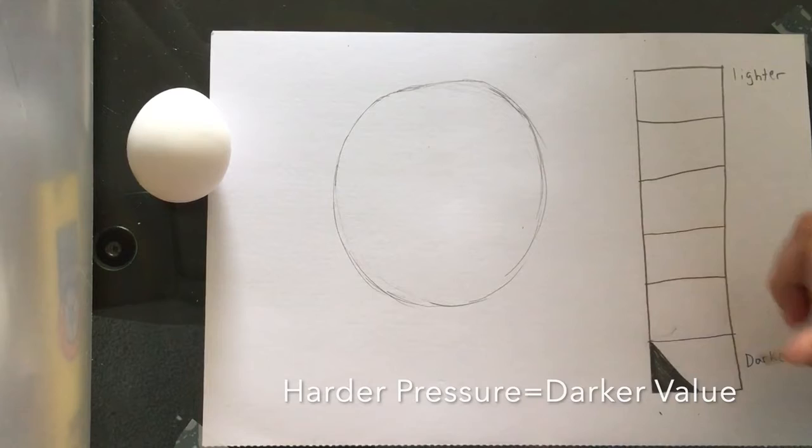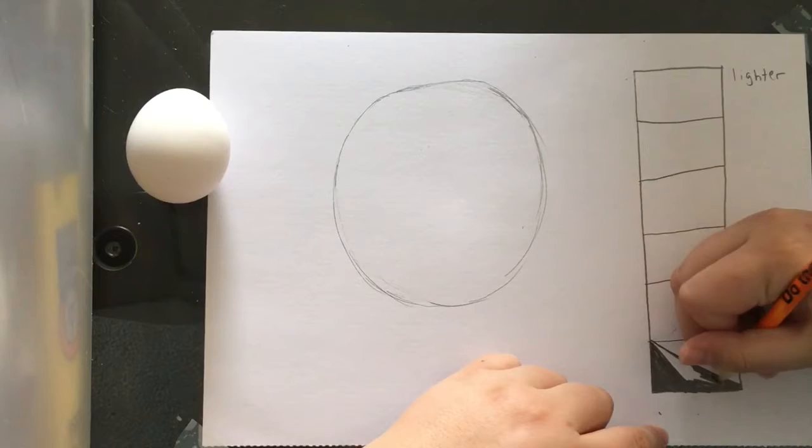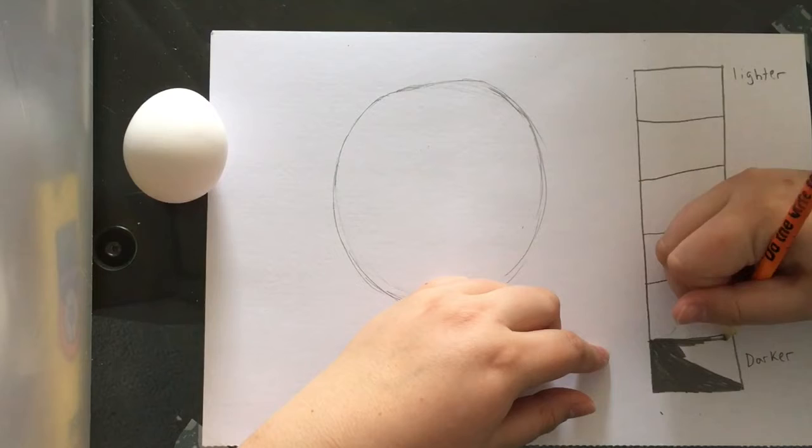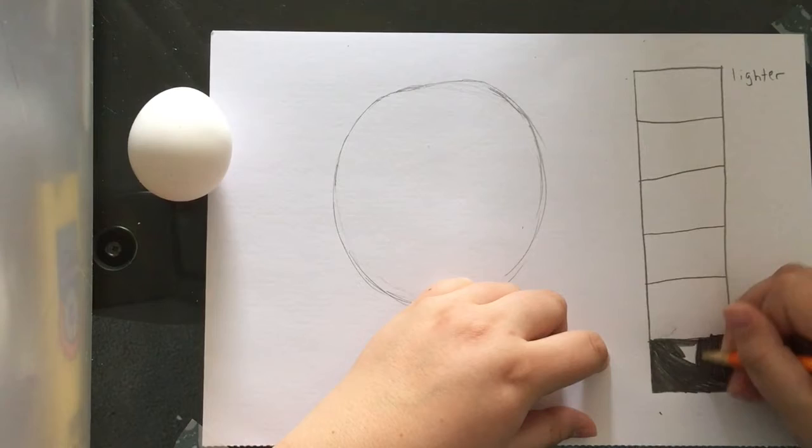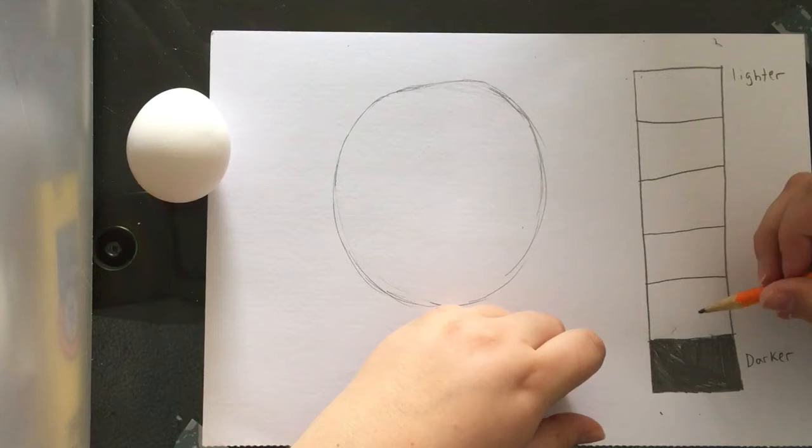This part sped up. I'm pushing very hard on the pencil to get this very dark line. The harder you push a graphite pencil into the paper, the darker the color will be. So I'm filling this in. And this will be my guide for the darkest values on my sphere.